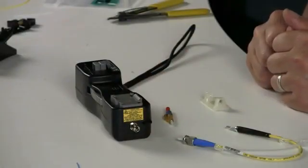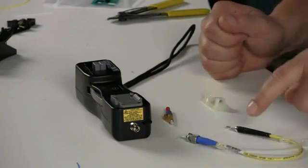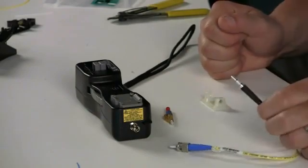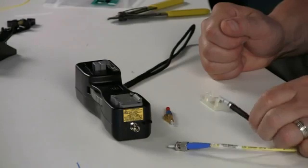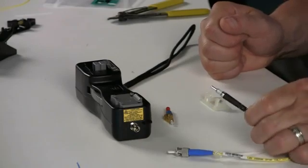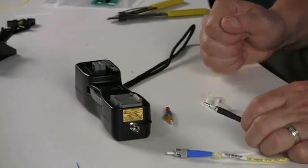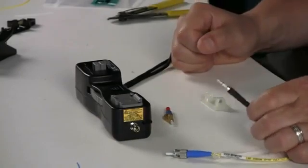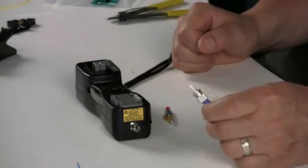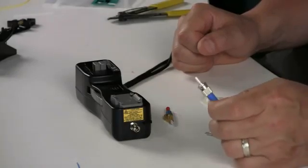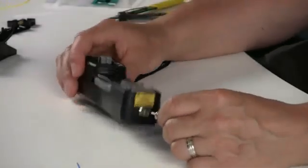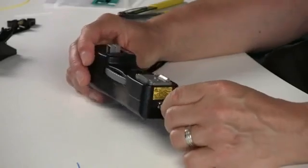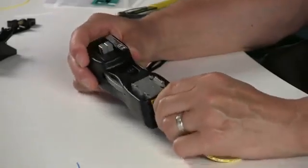To do an OptiCam termination, there are two patch cords associated with it. One is a 1.25 mm patch cord for LCs and one has a 2.5 mm patch cord for ST and SC. Today we're doing LCs so we're going to use the 1.25 mm cord. The ST portion of the patch cord lines up and goes into the LED portion of the OptiCam tool.